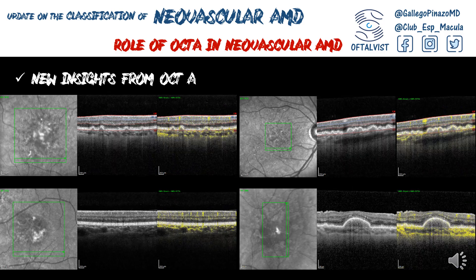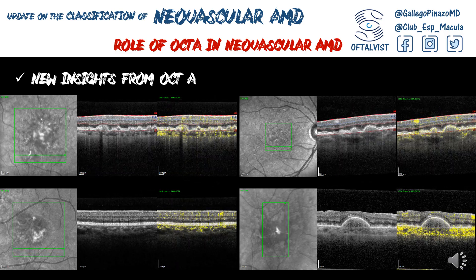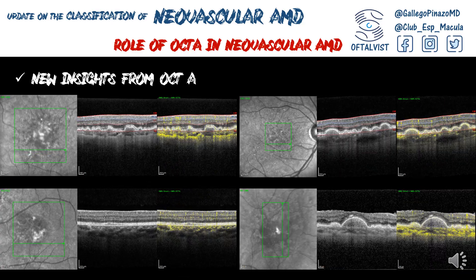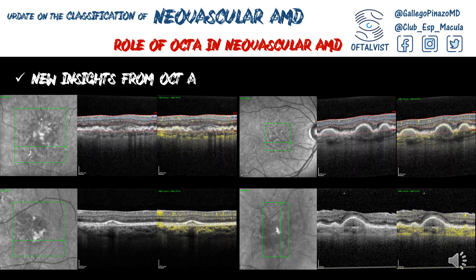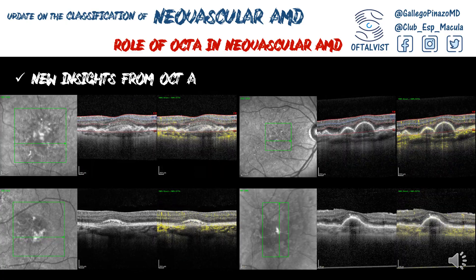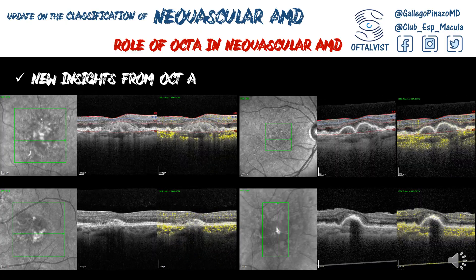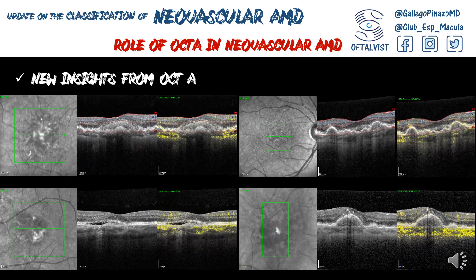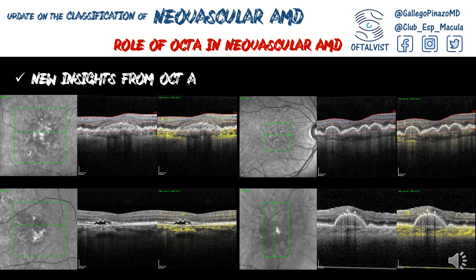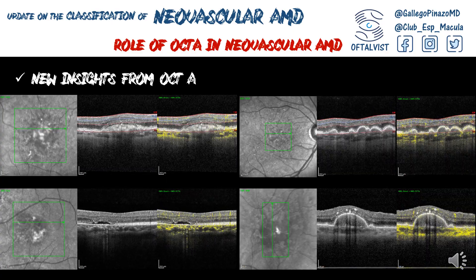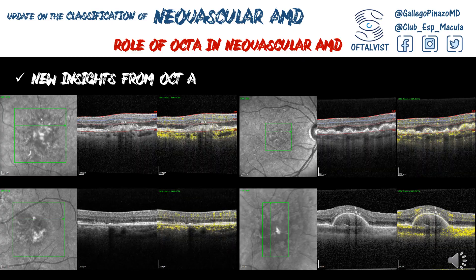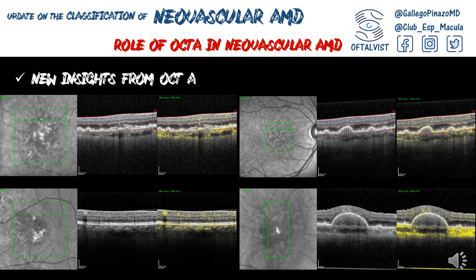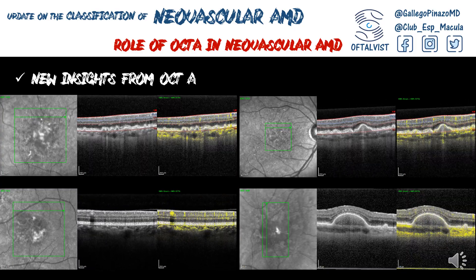And finally, in those challenging cases of acquired vitelliform lesions or drusenoid pigment epithelial detachments, when we find some degree of subretinal or even intraretinal fluid associated, OCTA is extremely helpful. The structural scan with flow overlay gives us the information to know if there is any vascular component within or complicating those lesions, or if there is no evidence of neovascular lesion, thus precluding any unnecessary intravitreal treatment for such cases.